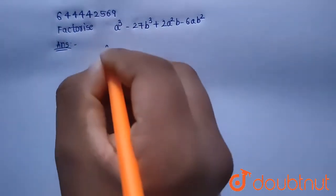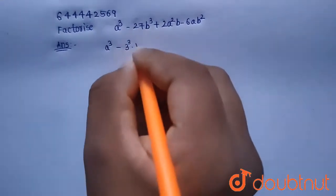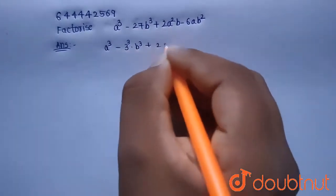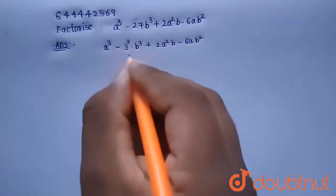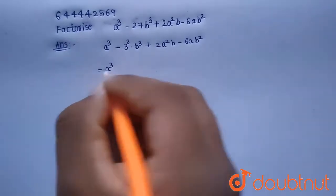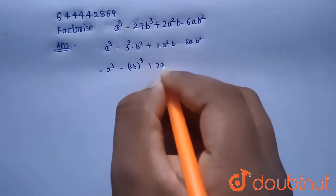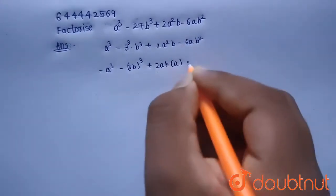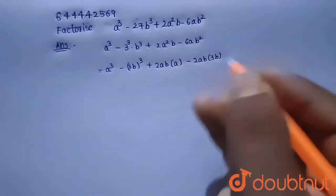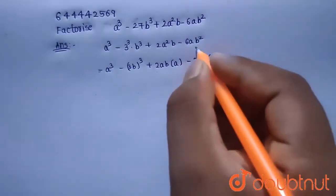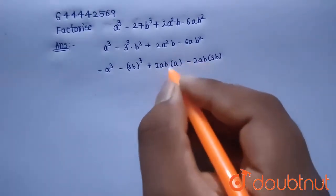Given a³ minus 27b³ — this 27 can be written as 3³, so we have a³ minus 3³b³ plus 2a²b minus 6ab². I can write this as a³ minus (3b)³ plus 2ab(a minus 3b), because 2×3 is 6, ab×b is ab², and ab×a is a²b.